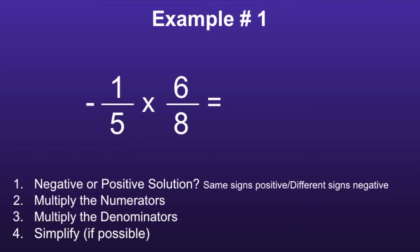Example number one: negative one-fifth times six-eighths. There are four steps to solve this problem. Step one is to determine whether the solution will be negative or positive. We can use the phrase same signs positive, different signs negative, in order to determine this.